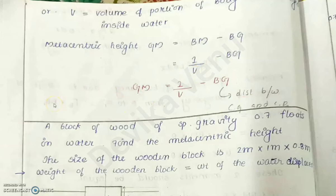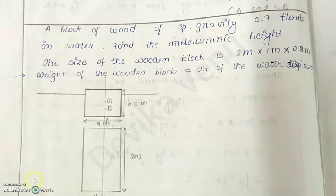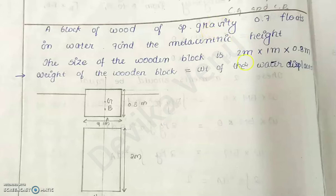Now we can write the metacentric height: GM = BM - BG, which gives GM = I/V - BG. Now let's see an example: a block of wood of specific gravity 0.7 floats in water. Find the metacentric height. The size of the wooden block is 2 × 1 × 0.8 meters.